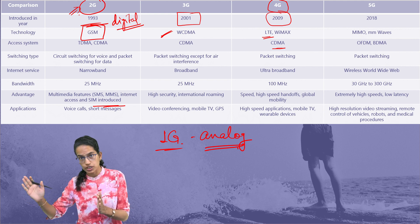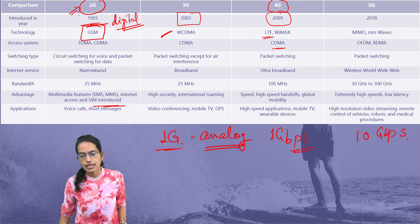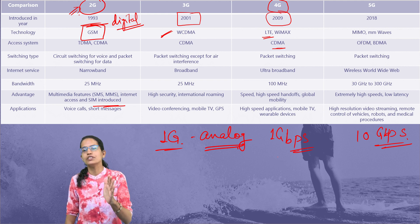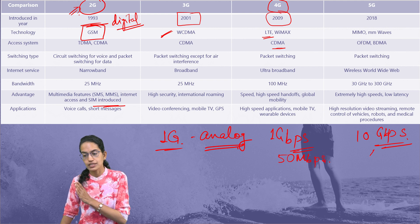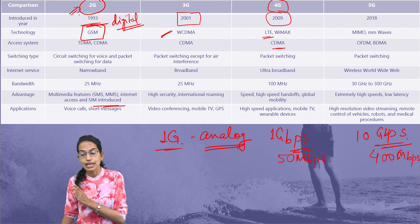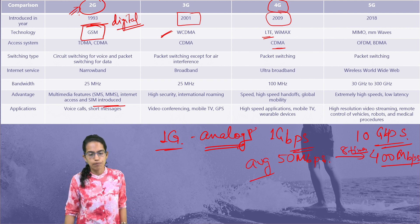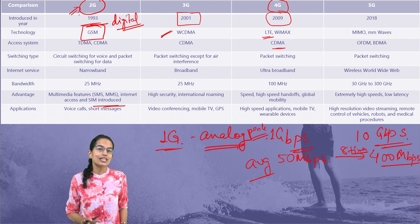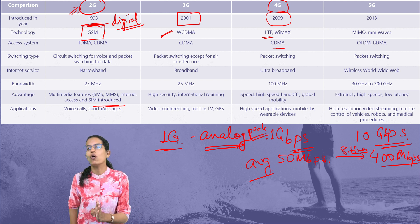The peak speed under 5G can reach up to 10 Gbps, showing how fast 5G is in contrast to 4G. The average speed in 4G would be 50 Mbps; however, in 5G this turns out to be 400 Mbps, which is nearly 8 times faster than 4G services. With 4G, a new segment introduced was wearable devices — this technology was possible only with 4G being launched.